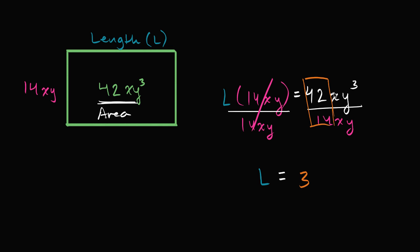And then I could say, well, x divided by x. That's just going to be one. And then I have y to the third divided by y. That is going to be y squared.